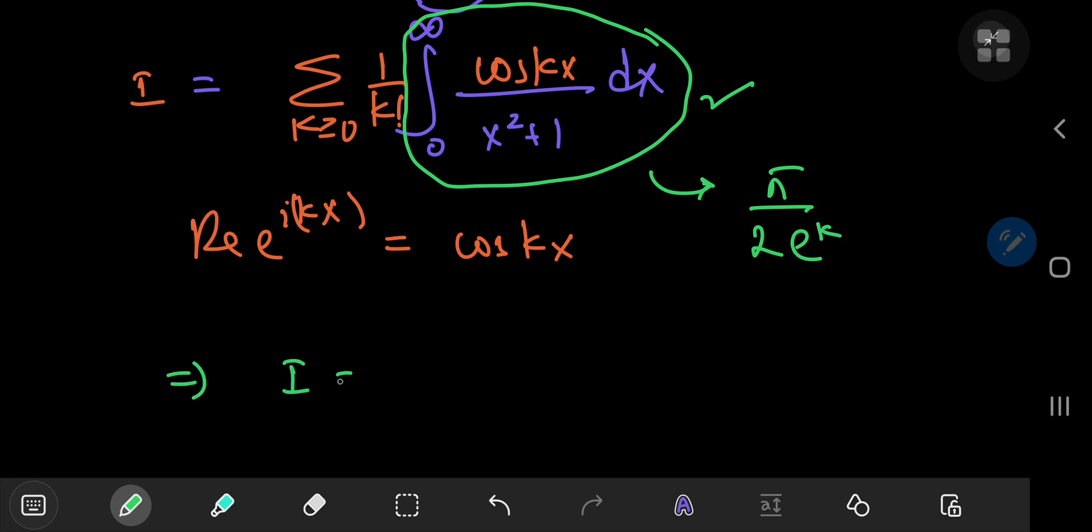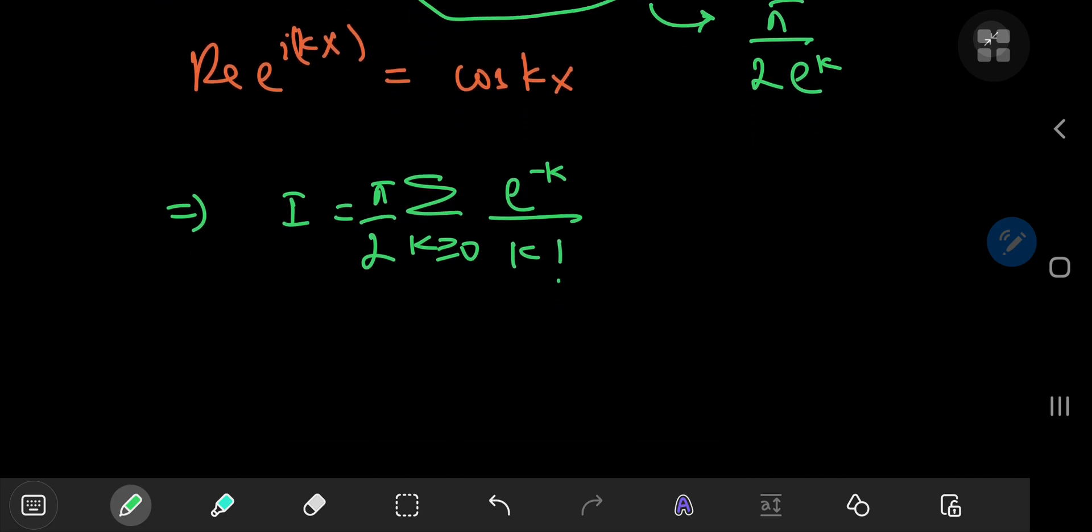So this implies that our integral I equals the infinite sum over k of pi by 2 is just a constant, so let's keep it out here, and e to the negative k, if you shift it up in the numerator, divided by k factorial.